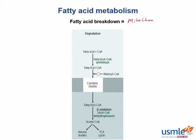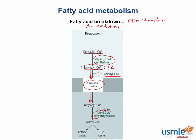Remember that fatty acid breakdown takes place within the mitochondria, and this process is also known as beta-oxidation. Our fatty acid chain plus coenzyme A get converted into the fatty acyl-CoA by the enzyme fatty acyl-CoA synthetase. These acyl-CoA molecules are transported into the mitochondria using the carnitine shuttle, which is inhibited by a buildup of malonyl-CoA. Once inside, acyl-CoA dehydrogenase converts fatty acyl-CoAs into acetyl-CoA by making a double bond, which is required for beta-oxidation.